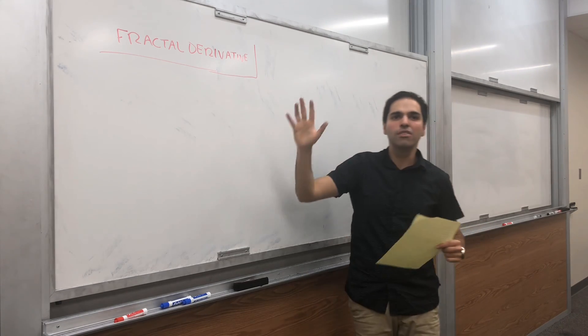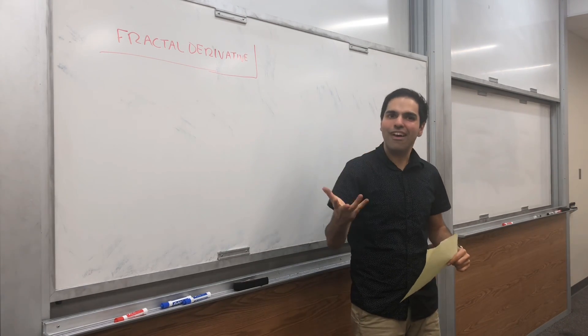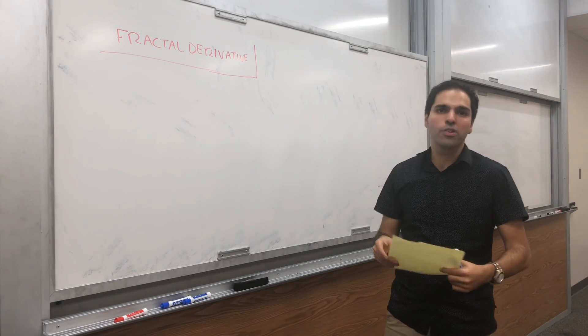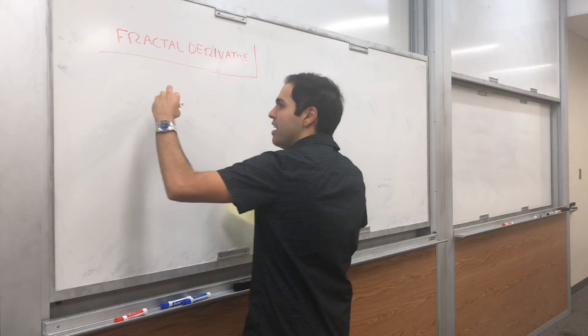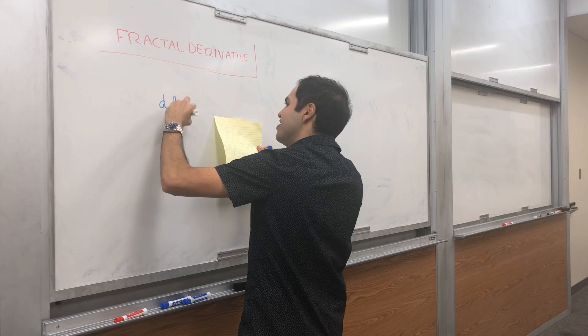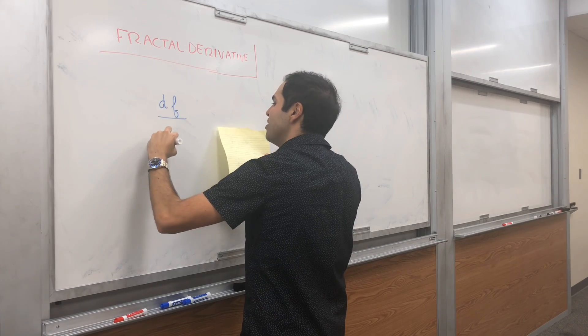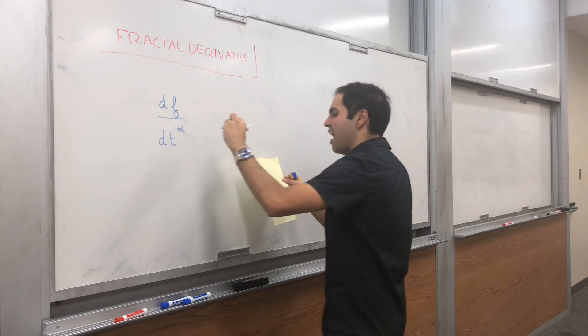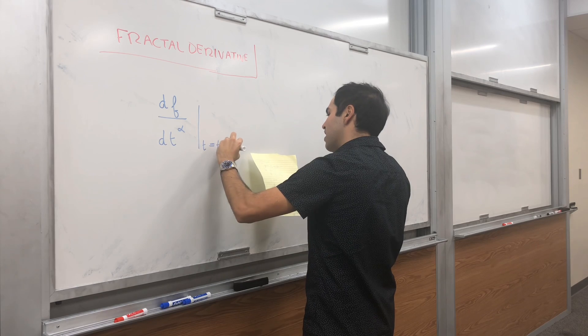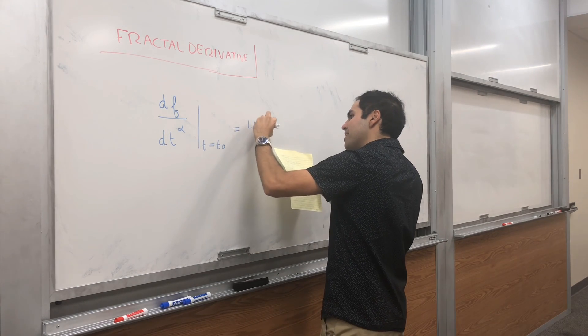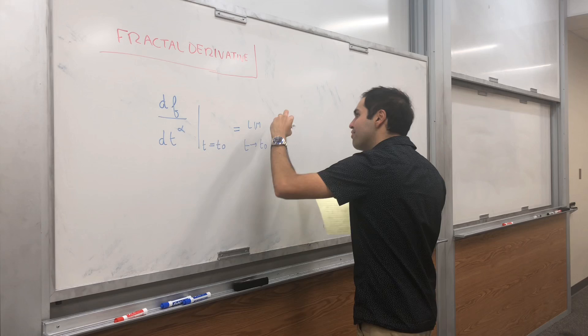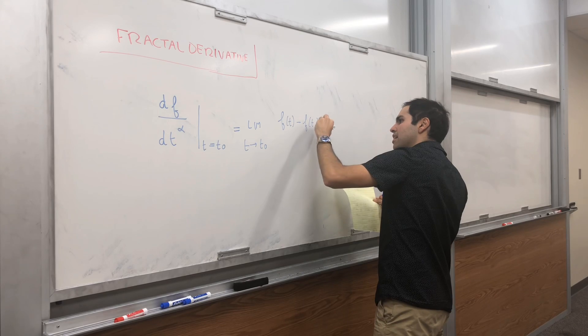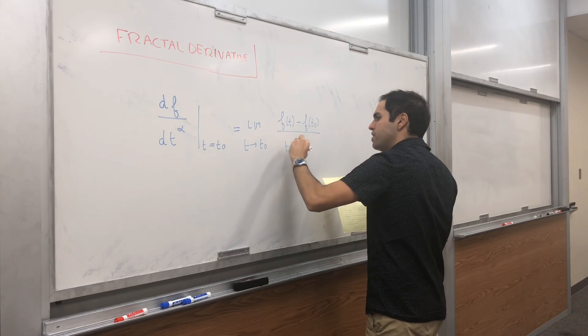And same with the fractal derivative, it's an analog of a fractional derivative where you're taking the derivative order to be between zero and one. And it's simply defined as follows. The derivative of f with respect to t alpha at t equals t naught is just the limit as t goes to t naught of f of t minus f of t naught over t minus t naught.